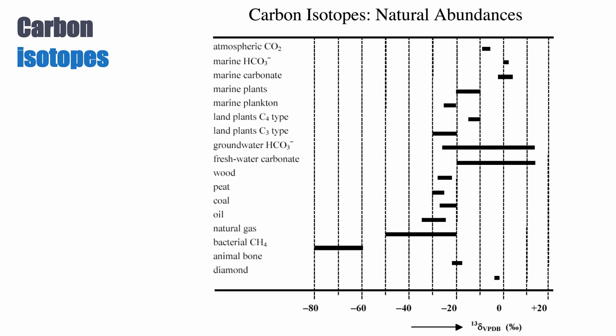Bacterial methane is probably the lightest product, plotting at around minus 60 to minus 80 per mil — very, very depleted compared to the volcanic degassing source. That's because of the bacterial processes that lead to the formation of that methane.